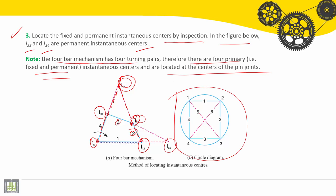If we make the circle diagram here, we have link number one, two, three, and four. The first instantaneous center of rotation is between one and two; the second between two and three; the third between three and four; and the fourth between four and one — these are the primary instantaneous centers of rotation. The fifth center is between one and three, and the sixth is between two and four.